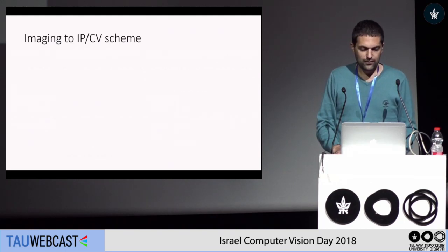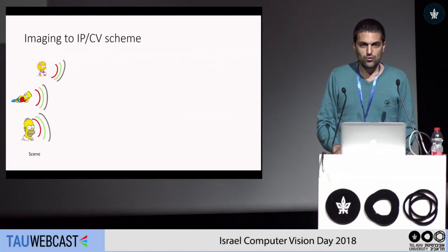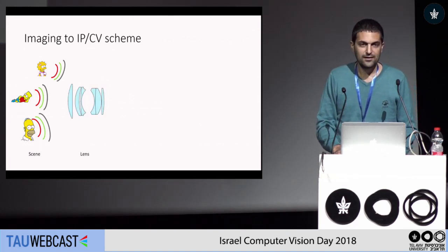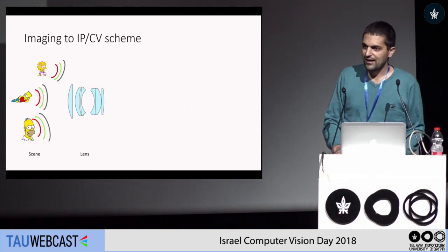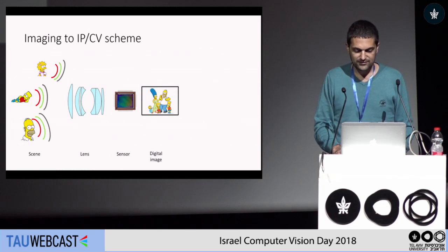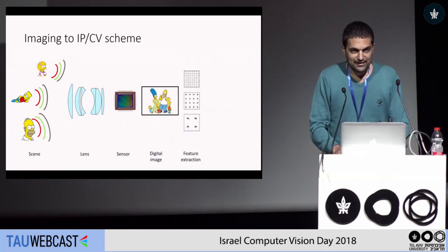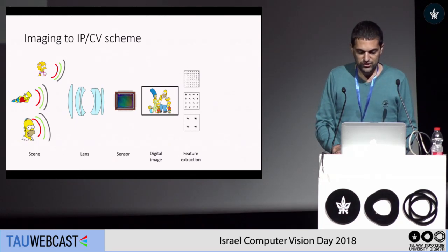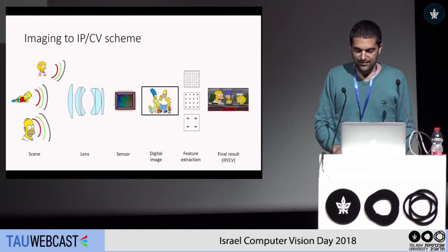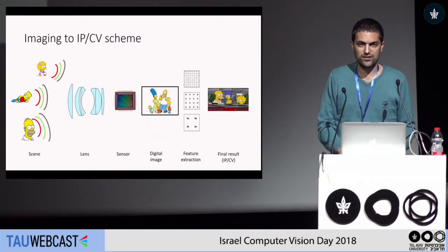When we think about standard image processing or computer vision, usually we have a scene with people that we want to take a picture of. Then light from these people goes through a lens captured by a sensor, and we get a digital image. In traditional computer vision or machine learning, people would extract features and then do some face detection or something else.